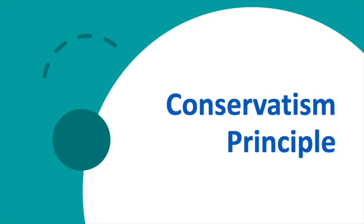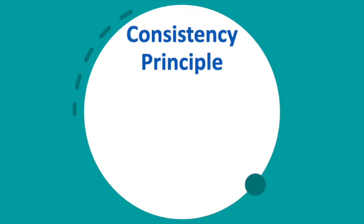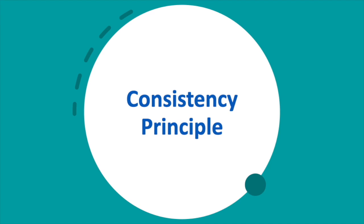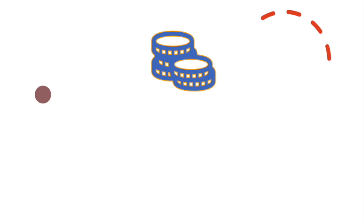This concept can be abused if a business persistently misstates its results to be worse than they really are. The third principle is the consistency principle. This concept recommends that once you adopt an accounting method, like a specific asset depreciation method, you should continue using the same method for different periods. Ignoring the consistency principle means that a business could continually jump between different accounting treatments of its transactions, making its long-term financial results extremely inconsistent.